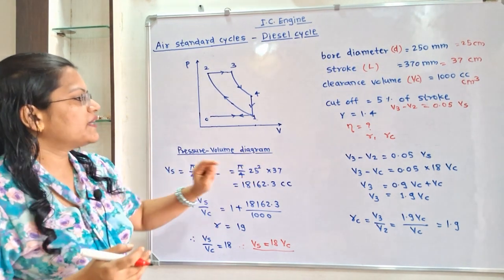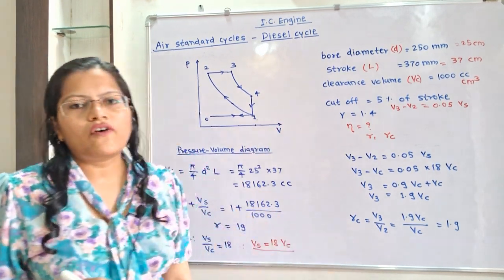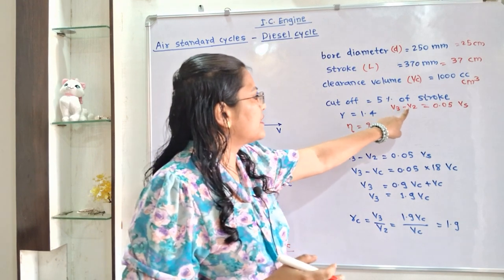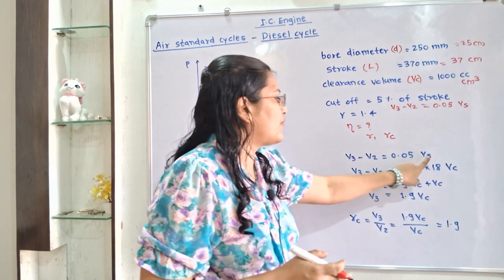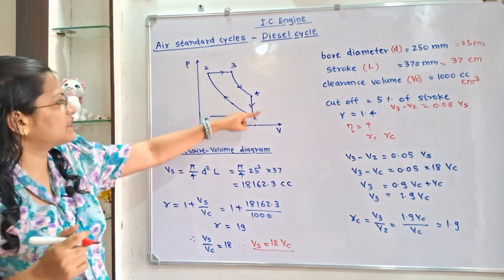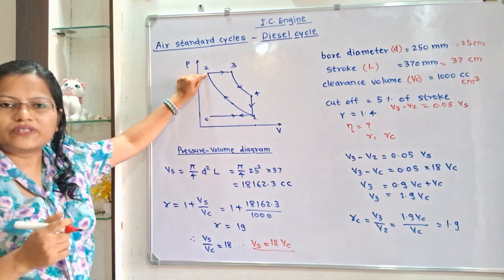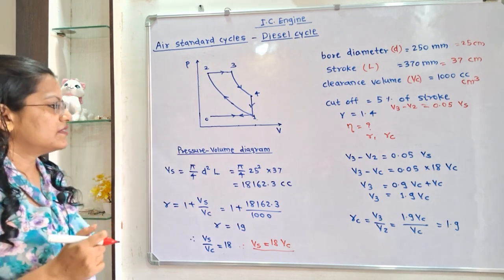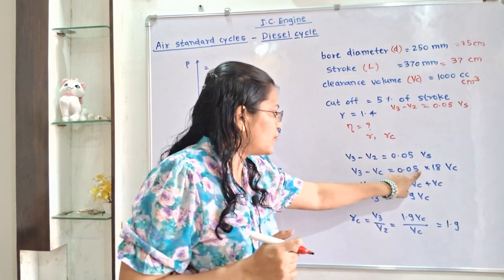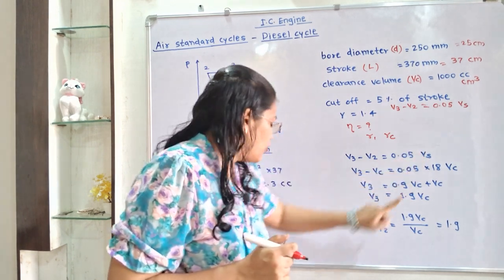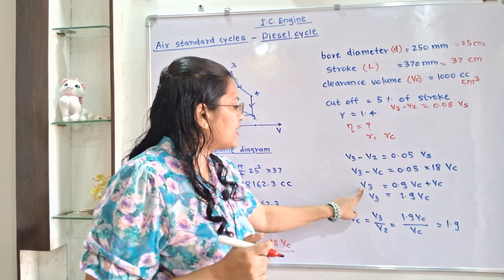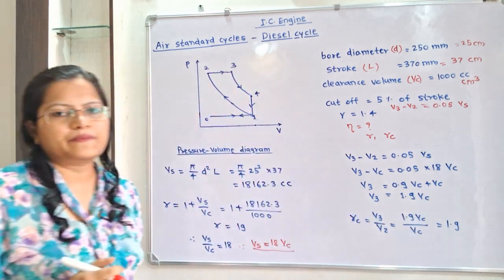Now we find the cut-off ratio Rc, which equals V3 divided by V2. We have the relation V3 minus V2 equals 0.05 Vs. From the PV diagram, the volume at point 2 (V2) is the clearance volume Vc. Substituting, V3 minus Vc equals 0.05 × 18Vc. Solving this gives V3 equal to 1.9 Vc.